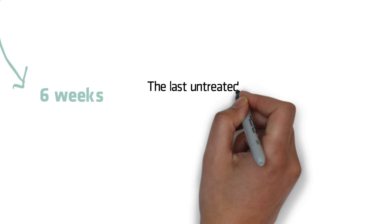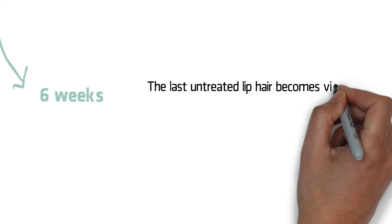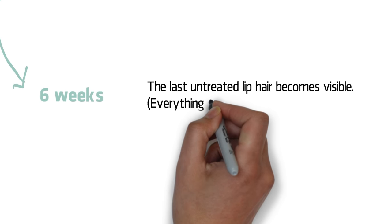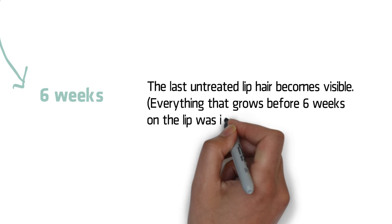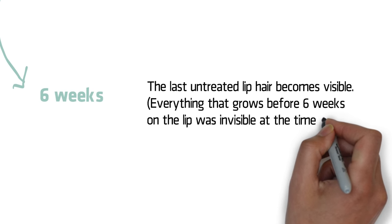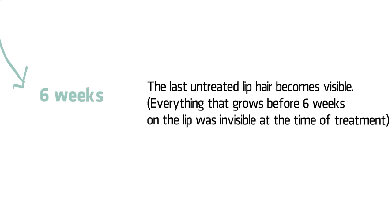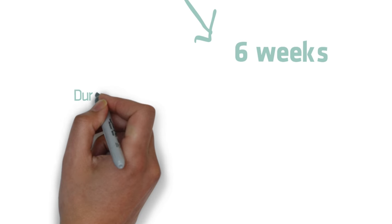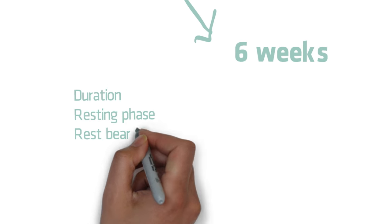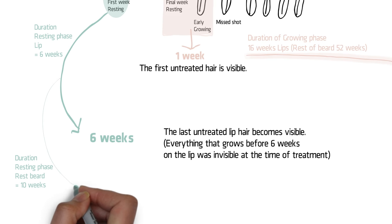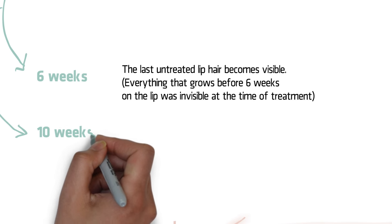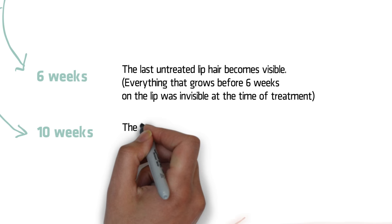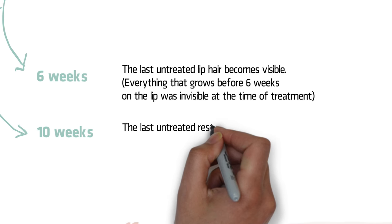So every lip hair appearing before 6 weeks was not visible, so not treated, during the first clearing session. On the rest of the face, the average resting duration is 10 weeks, so all non-treated hairs will be visible again after 10 weeks. Every hair appearing before 10 weeks was not treated during the first clearing.